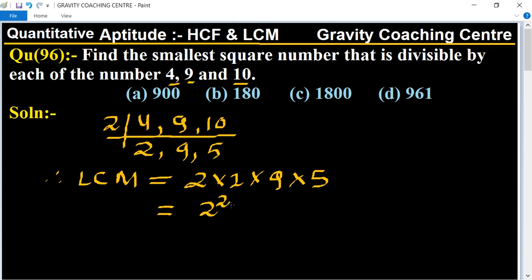This equals 2 squared times 3 squared times 5. Here the 5 is not in pair, so for a perfect square number...